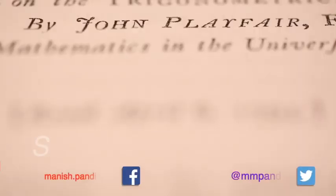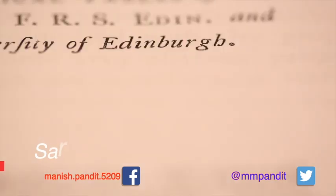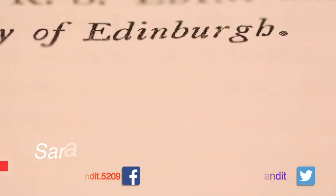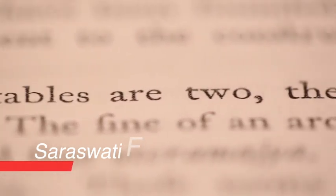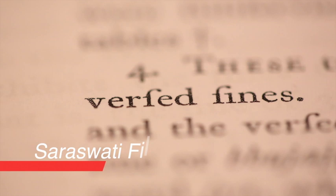John Playfair, Astronomer and Mathematician in Edinburgh, who set up the Royal Society of Edinburgh, came across the Surya Siddhanta in the late 1700s. This text contained tables of astronomy and trigonometry, including a table of sines and a table of versed sines.